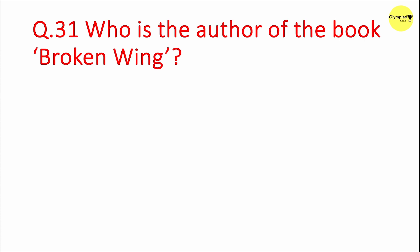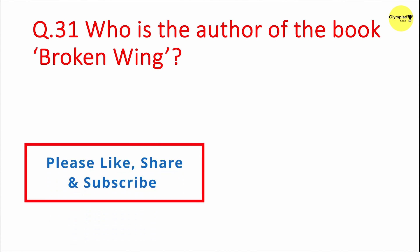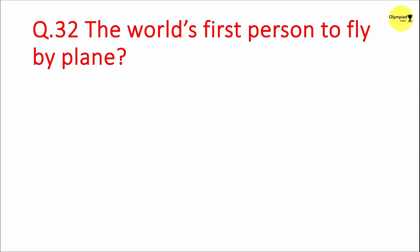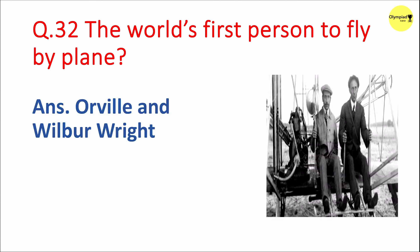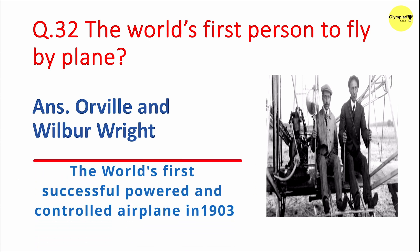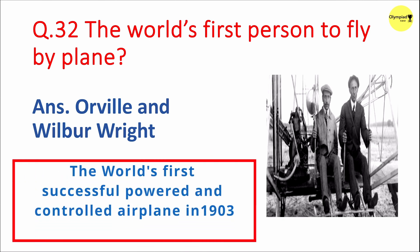Question 31: Who is the author of the book 'Broken Wings'? Answer: Sarojini Naidu. Question 32: Who was the world's first person to fly a plane? Answer: Orville and Wilbur Wright. The Wright Brothers, Orville and Wilbur Wright, are credited with inventing and building the world's first successful powered and controlled airplane in 1903.